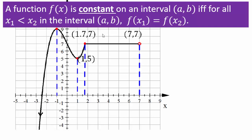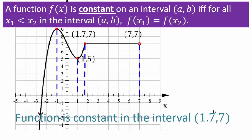Mathematically speaking, we say a function is constant on an interval (a, b) if and only if for all x1 smaller than x2 in the interval (a, b), f of x1 equals f of x2. All that means is that the y-coordinates are the same for any two x-coordinates in this interval (a, b). So in this case, the function you see here is constant from x equals 1.7 all the way to x equals 7.